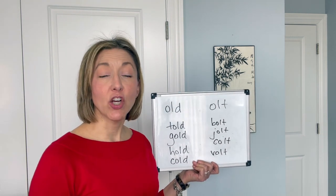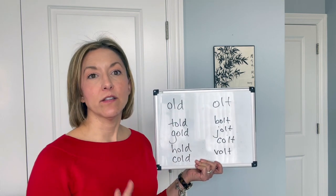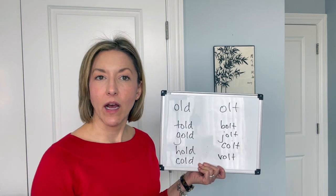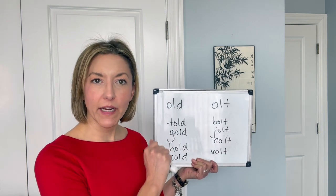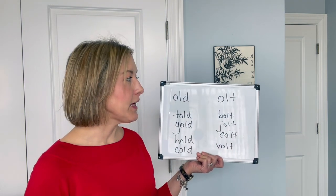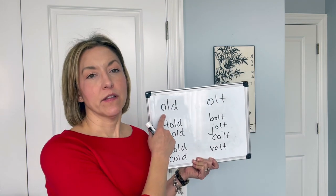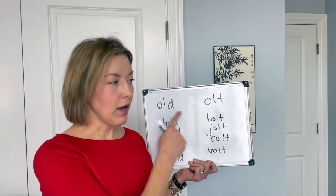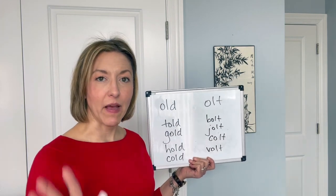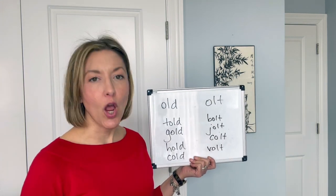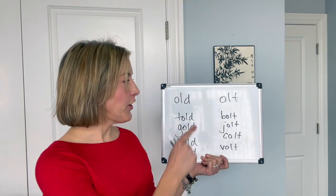Typically, when we have a closed syllable in English — meaning it ends with one or two consonant sounds — that vowel before it is going to be short. Many of my students think this should be a short vowel, but in this case this is a spelling and reading exception. We're going to say the long O.